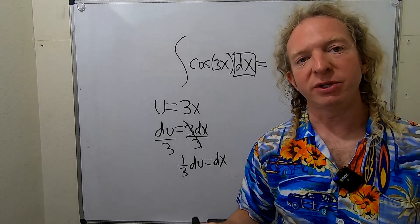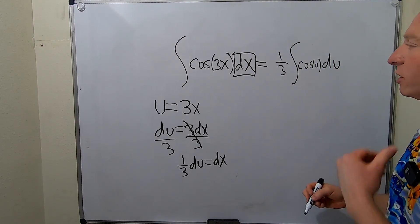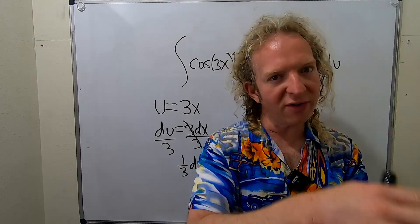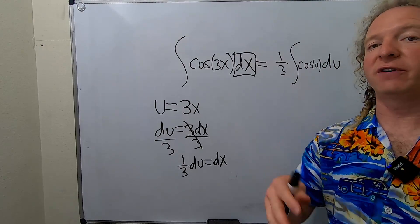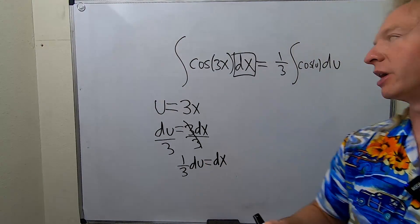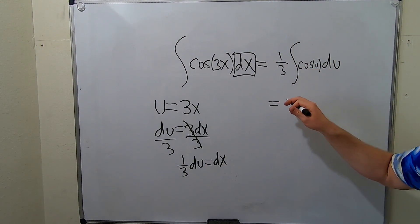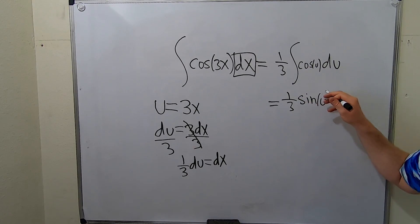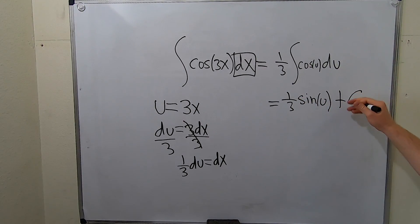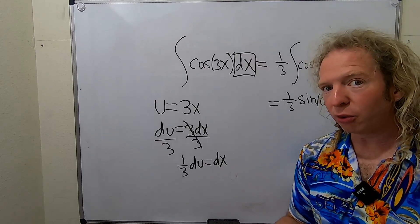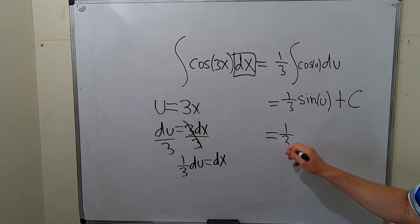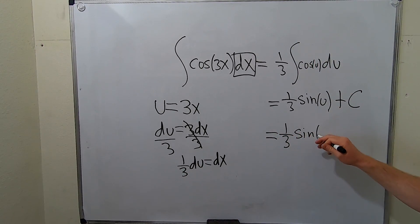Now we can integrate this. We're integrating cosine, so the question is: what is a function whose derivative is cosine? Well, the derivative of sine is equal to cosine. So when you integrate cosine, you get the sine function. So we have 1/3 sine of u plus our constant C. But u was equal to 3x, so we plug that back in: 1/3 sine(3x) plus C.